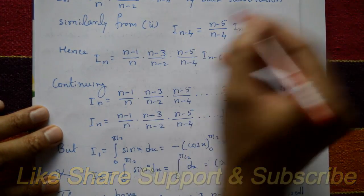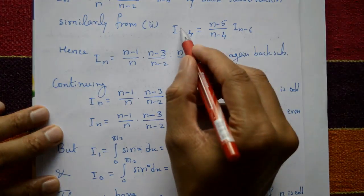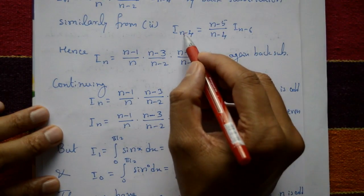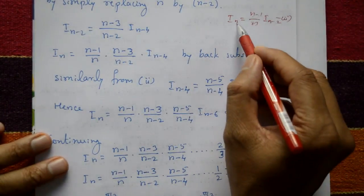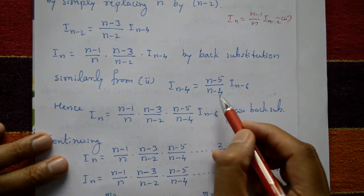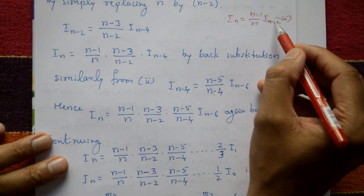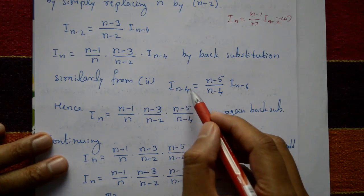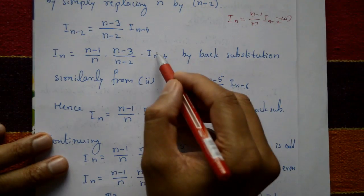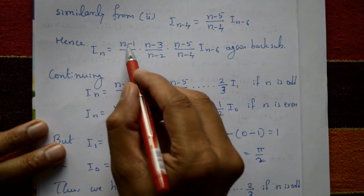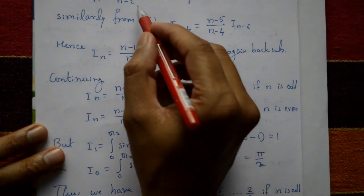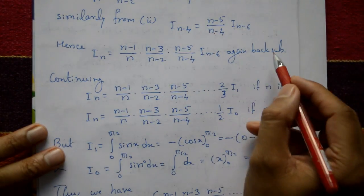Continuing back substitution: replace n by n−4 to get Iₙ₋₄ = (n−5)/(n−4) · Iₙ₋₆. Substituting, we get Iₙ = (n−1)/n · (n−3)/(n−2) · (n−5)/(n−4) · Iₙ₋₆, and this process continues.